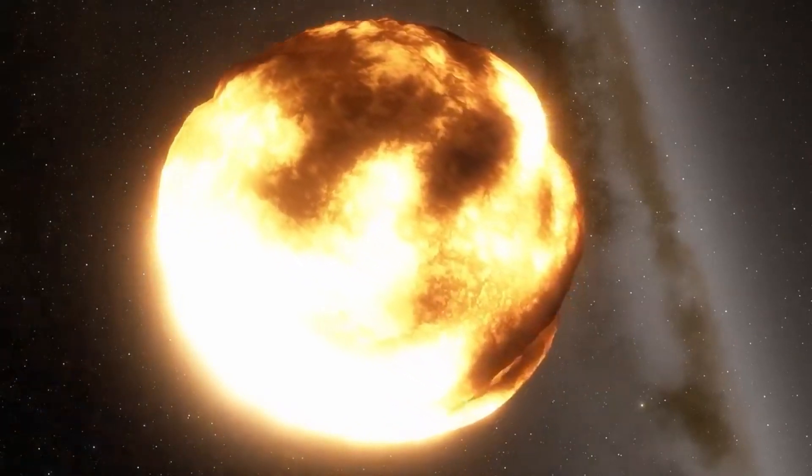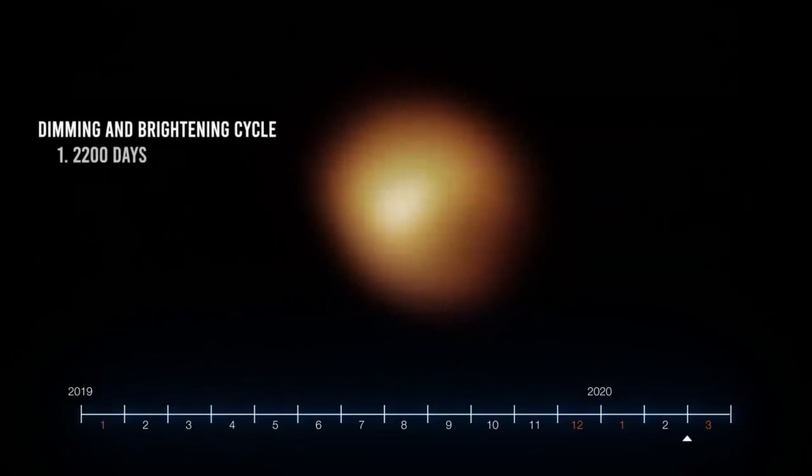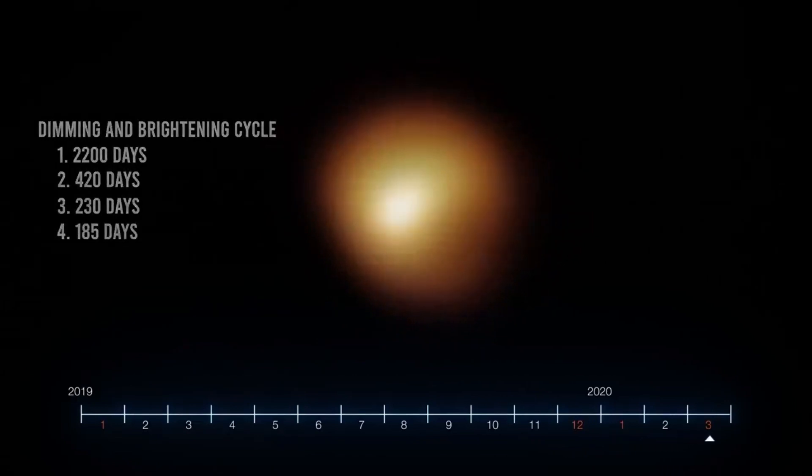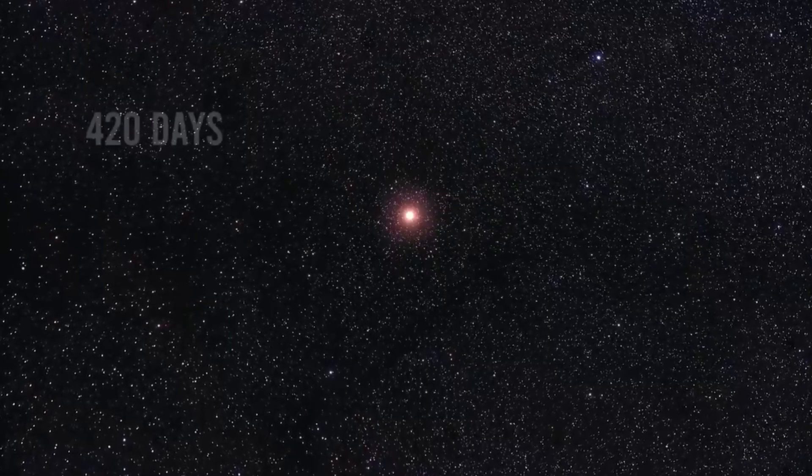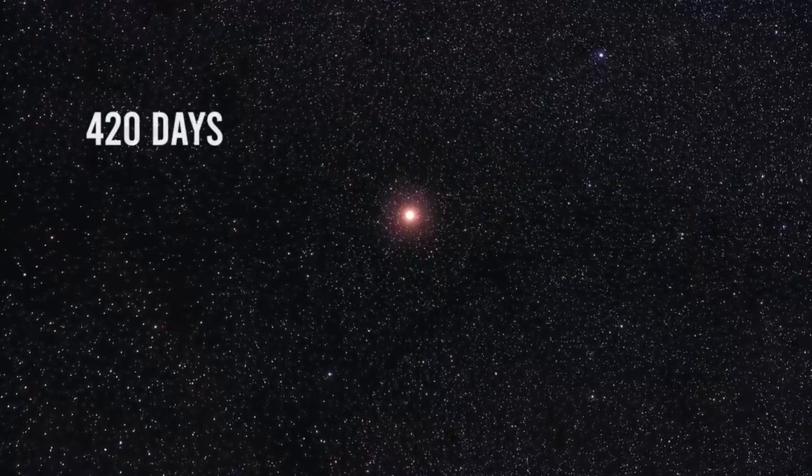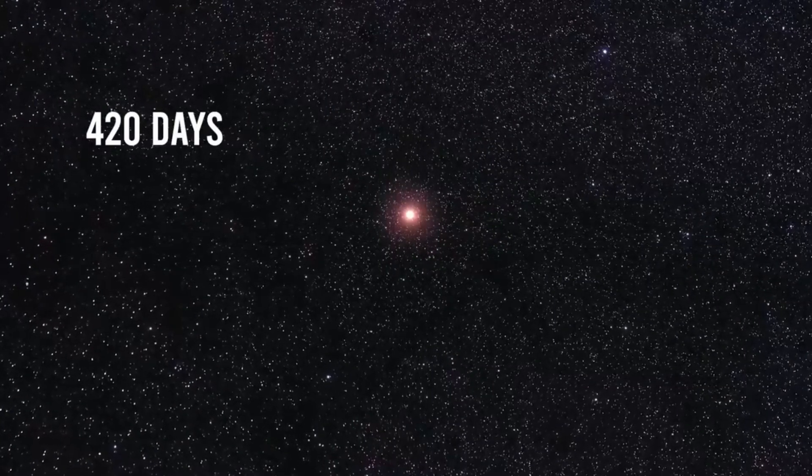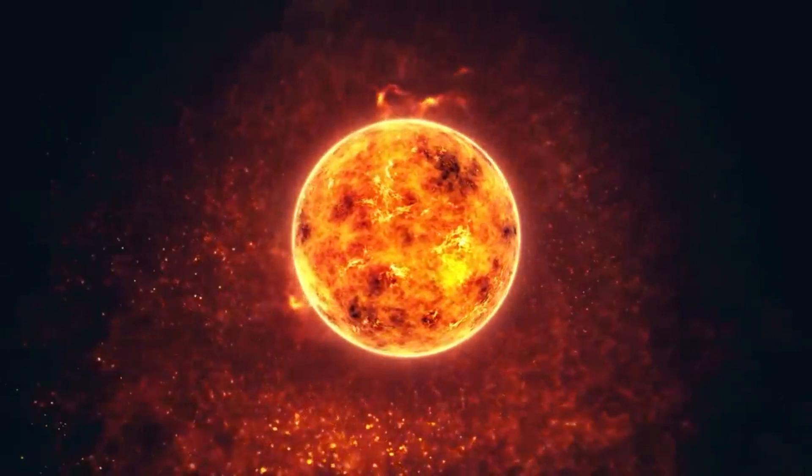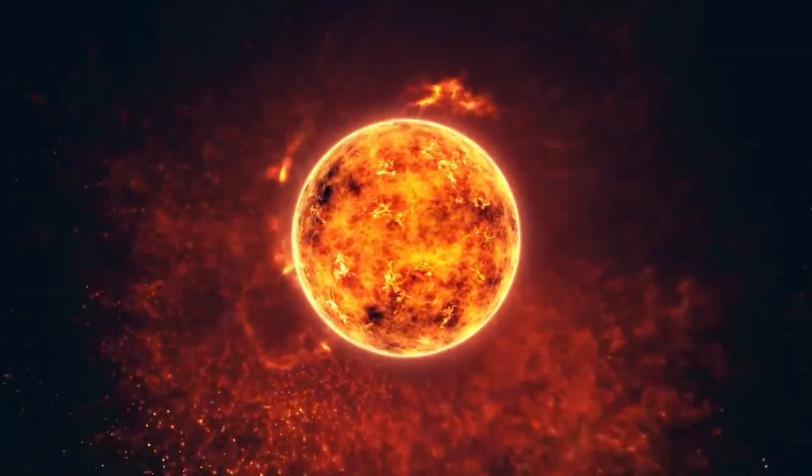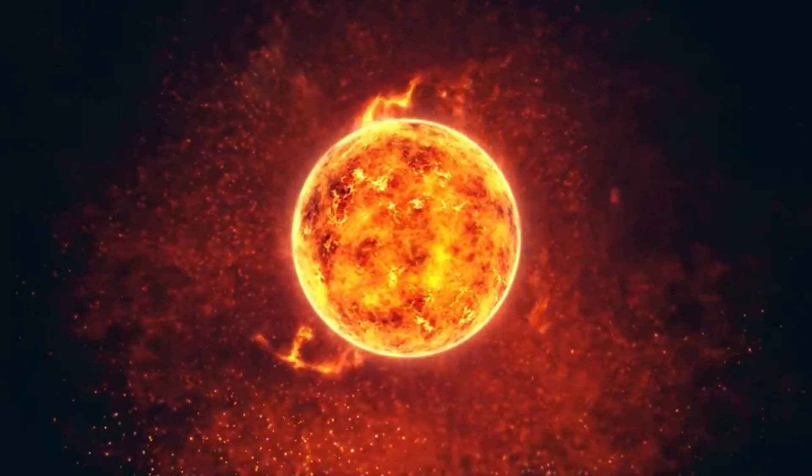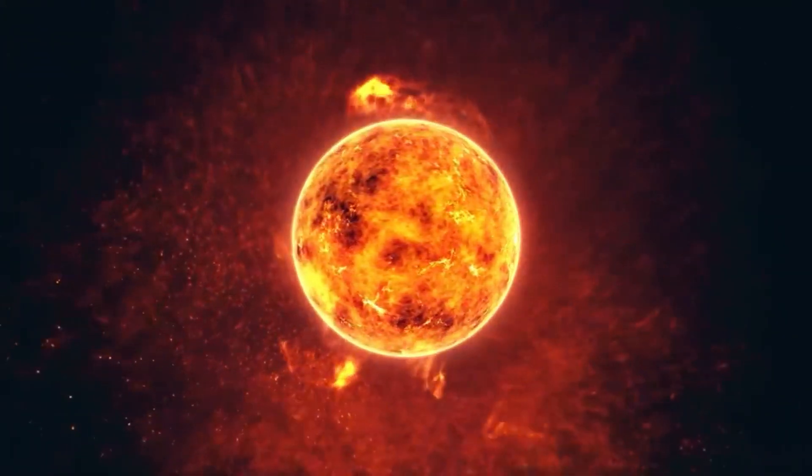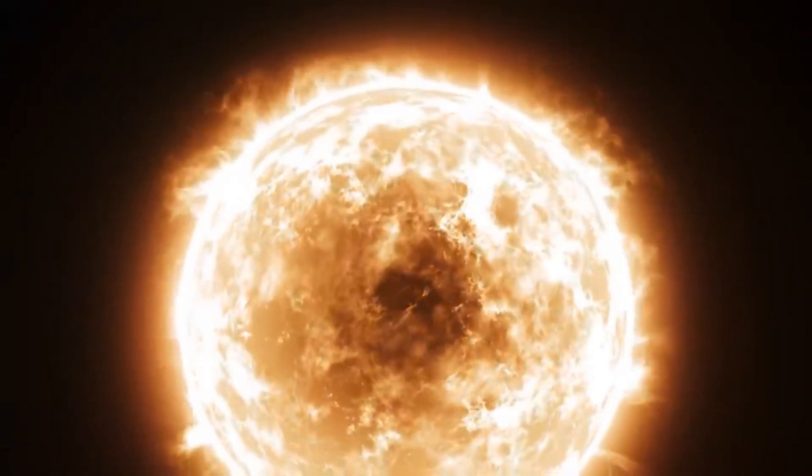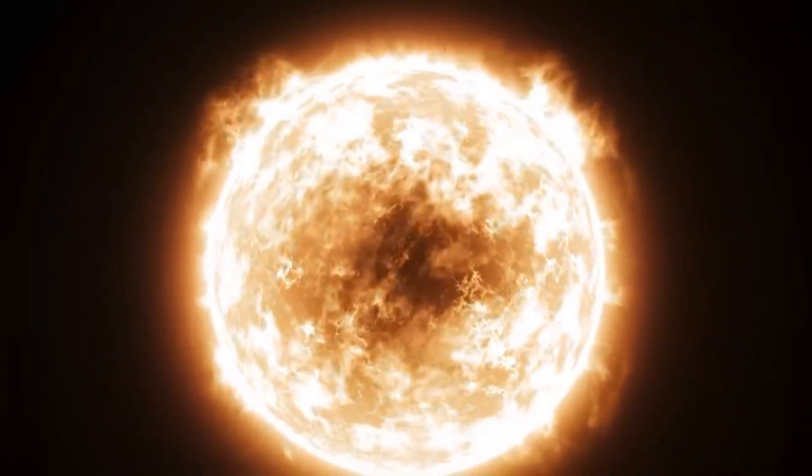Betelgeuse, you see, is inherently unstable, regularly expanding and contracting with overlapping overtones. Over the past century, astronomers have observed variations in its brightness occurring over intervals of 2,200 days, 420 days, 230 days, and 185 days. Typically, they regard the 420-day cycle as the primary pulsation, with the shorter cycles serving as overtones. The 2,200-day period, or 6 years, is generally considered a long secondary period, a characteristic of unknown origin that is common among one-third of supergiant stars.